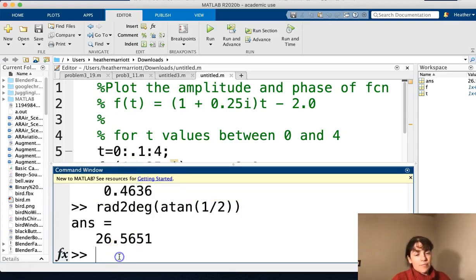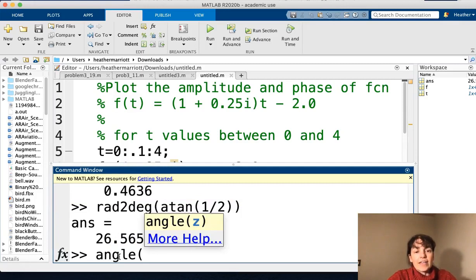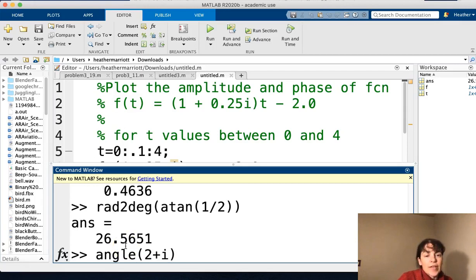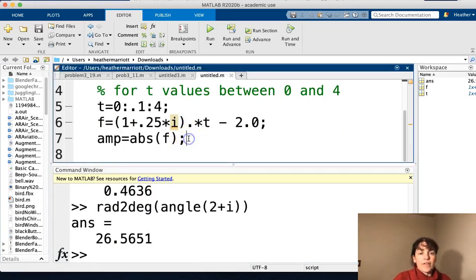Well, there's a shortcut way to do it in MATLAB. You could use the angle function and the angle of our complex number was 2 plus i. And again, this angle it's going to give us is in radians. So we could go from radians to degrees and find out that was the same angle we got before using our tangent and the opposite over the adjacent.